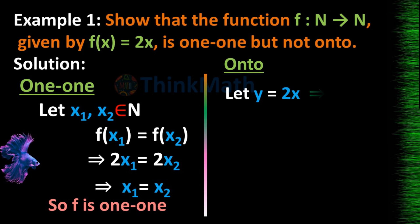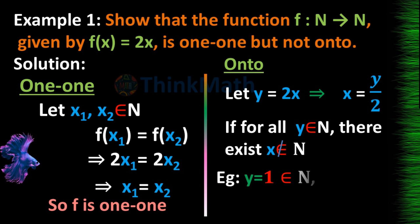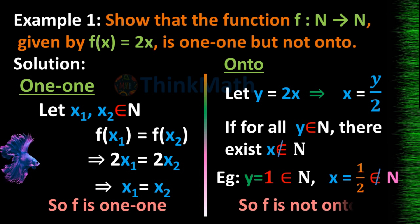Let y equal to 2x, which implies x equal to y divided by 2. If for all y belonging to N, there exists x not belonging to N. For example, y equal to 1 belongs to N, but x equal to 1/2 is not belonging to N. So f is not onto.